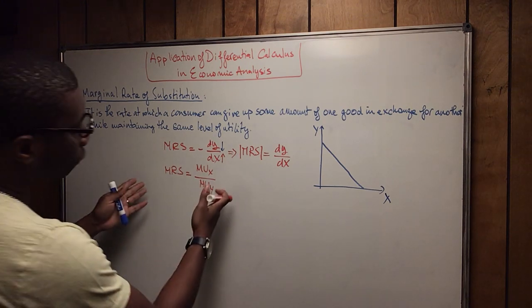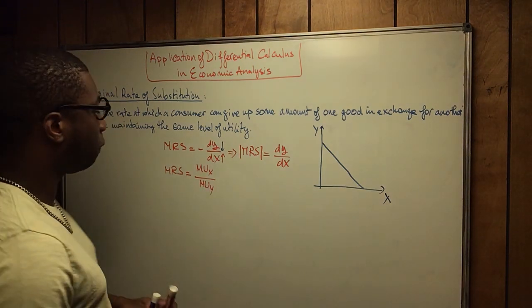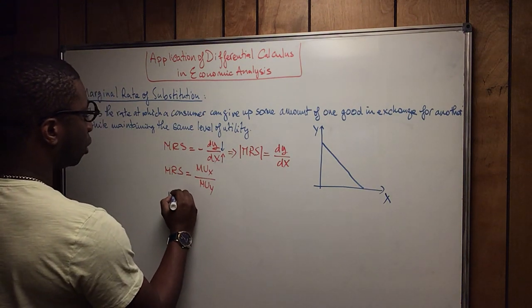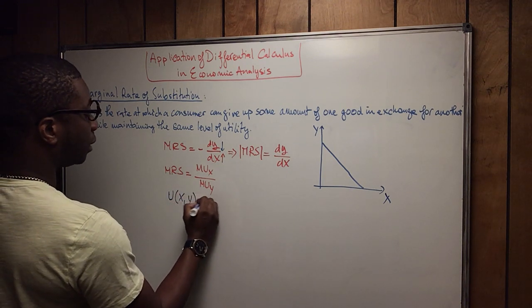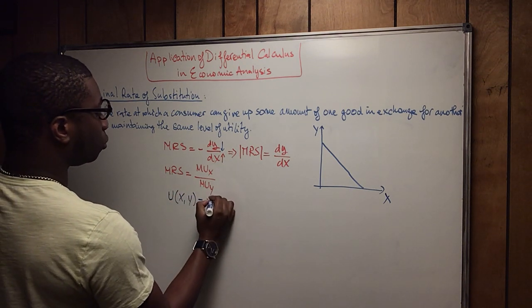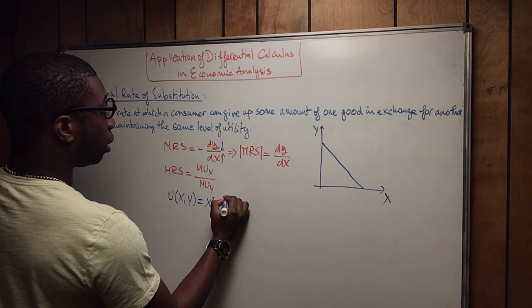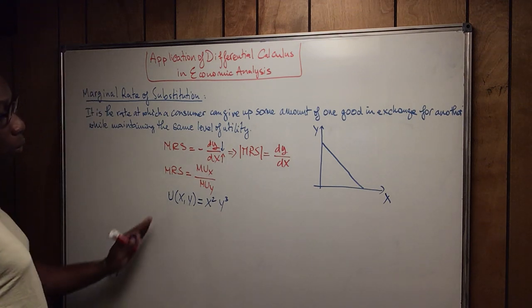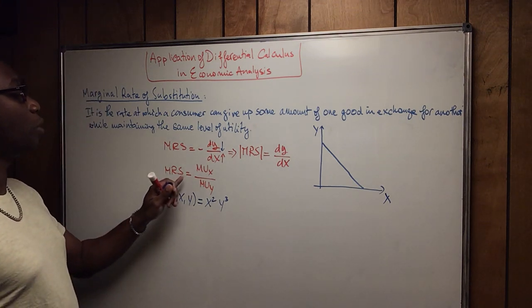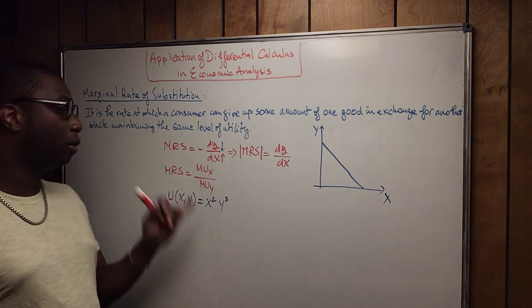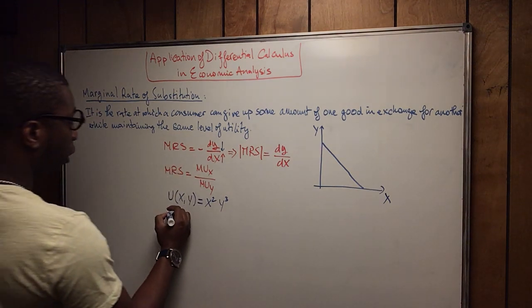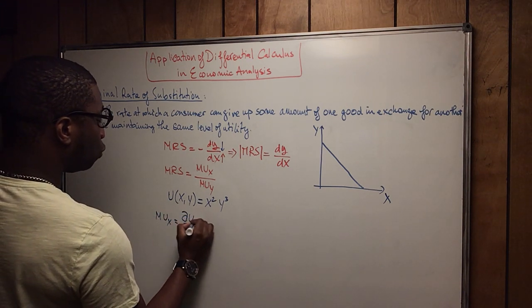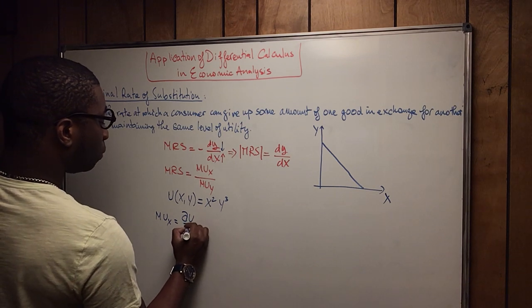Now I'll show you an example of how to determine the marginal rate of substitution. Let's say you have a utility function U(X, Y) where X equals X squared and Y equals Y cubed. In order to apply the MRS, we first calculate the marginal utility of X: MU_X equals the partial derivative of U with respect to X.